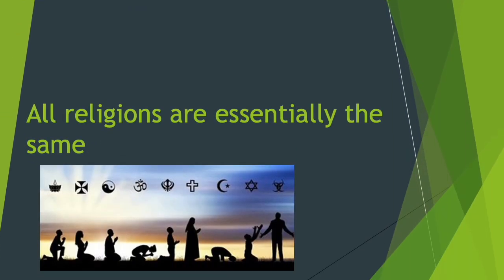Another theme the novel explores is that all religions are essentially the same. During his childhood and early adolescence, Pi starts to discover the central belief of all three religions he explores and practices — that is, love. His faith is severely tested during his ordeal, but in the end, his survival against tremendous odds and the gratitude and love he develops for Richard Parker serve to strengthen his religious faith and his desire to practice all three religions.